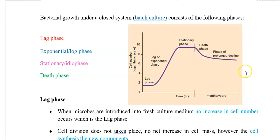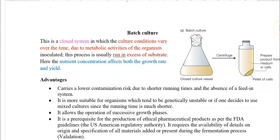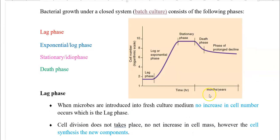Bacterial growth can be well analyzed in a closed system referred to as a batch culture. The batch culture is a closed system in which culture conditions vary over time due to the metabolic activities of the organism. Especially after inoculation, the process is usually run in excess of substrate. The nutrient concentration affects both the growth rate and yield of the cultures. When bacterial growth is analyzed in a batch culture, the following growth phases may be visualized.